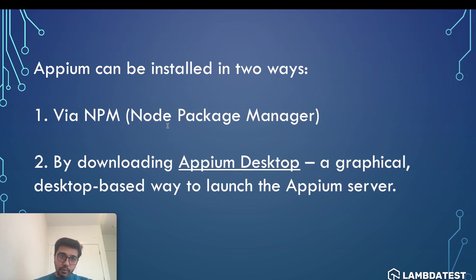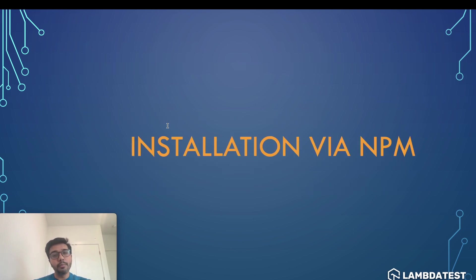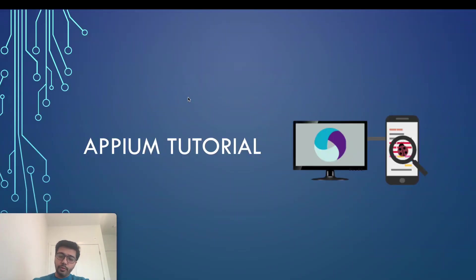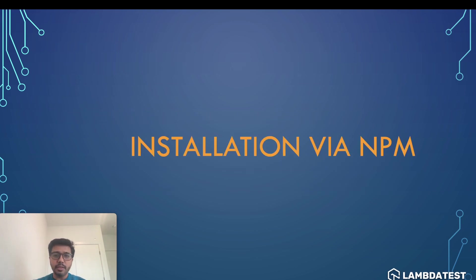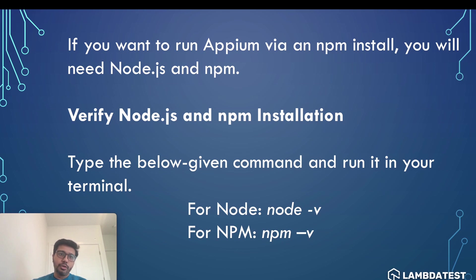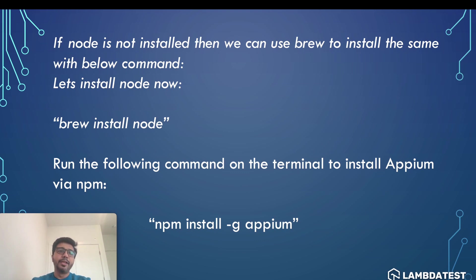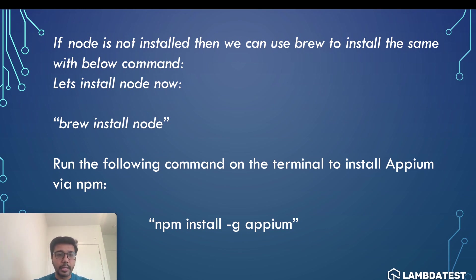Always remember: before you try to install Appium using NPM, you should make sure that NPM is already installed on your machine. So before we start installing Appium using NPM, we have to make sure that both Node and NPM are installed. If Node is not installed, we can use Homebrew to install it with the command: brew install node. I'll show you this by running it in my command line.